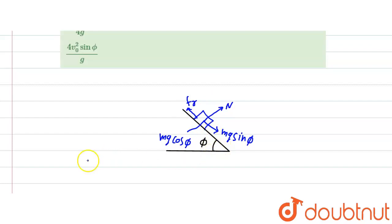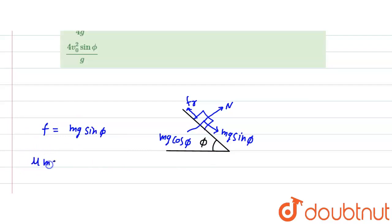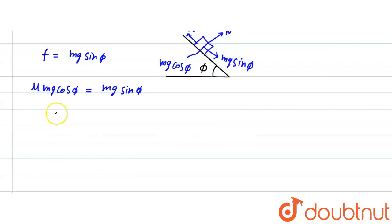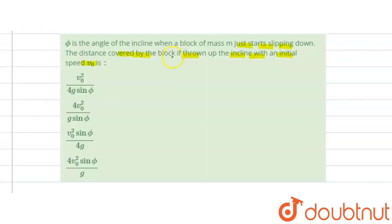When the block just starts slipping, friction equals mg sinφ. Since friction is μ times the normal force, we have μ mg cosφ = mg sinφ, which gives μ = tanφ.